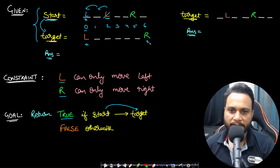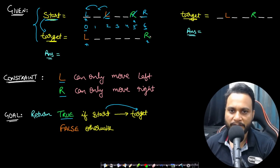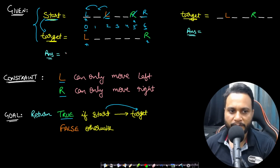Looking at the second piece, the R in the target is at index 6, and in start it is at index 5. Can we move it to index 6? Yes, we can move it. So R will move to index 6, and we've matched each piece exactly at the same place by doing certain movements — that is why we return true in this case.